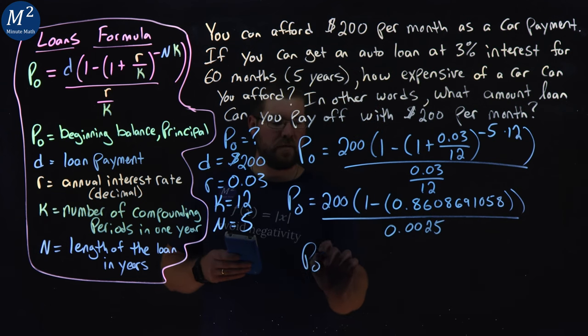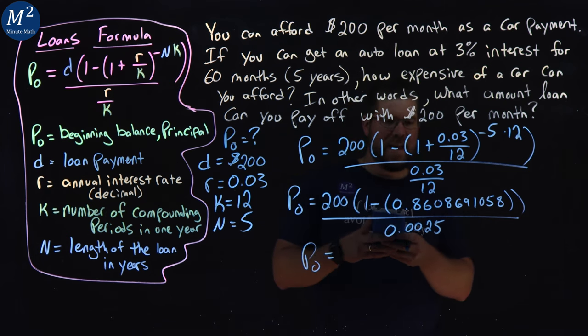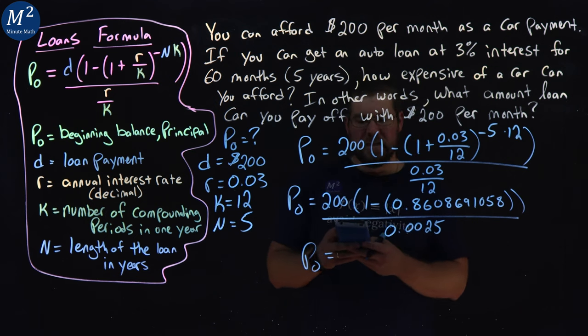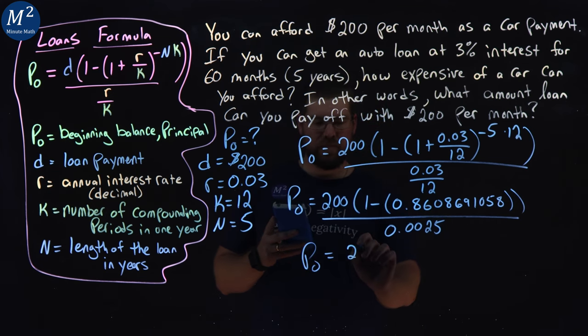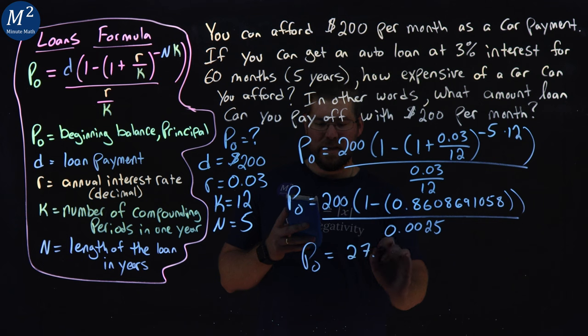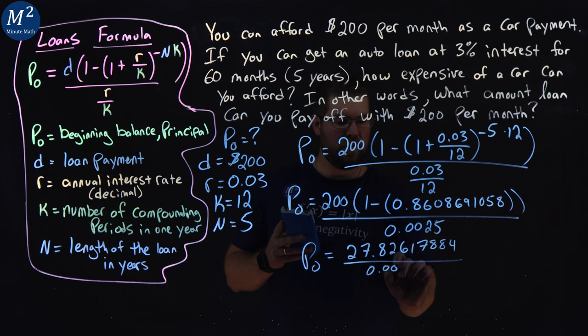Now to simplify this, we have one minus this large decimal. So one minus 0.8608691058 gives me 0.1391. We're going to multiply that by 200 and we get 27.82617884. And we're going to divide that by 0.0025.